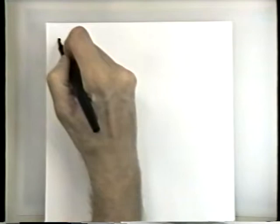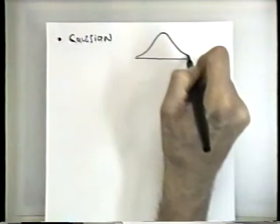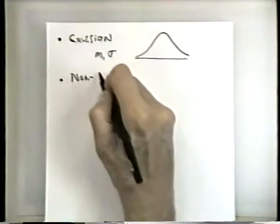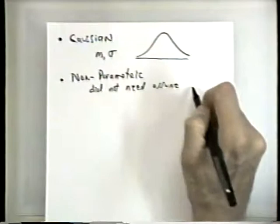What we're going to do today is continue in our hierarchy of things. Where we've been so far: we started off with Gaussian statistics, which had a nice normal distribution with a mean and variance. Then we expanded this to non-parametric statistics, where we did not need to assume a form for the probability density function.